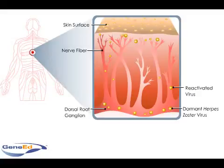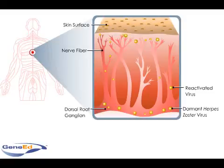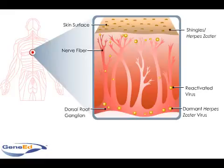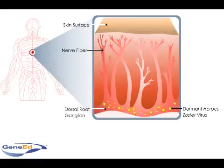When herpes zoster reactivates, it inflames the dorsal root ganglion and infiltrates dorsal root neurons. This inflammation hinders dorsal horn cellular metabolism. In particular, it impairs nerve conduction and pain transmission.